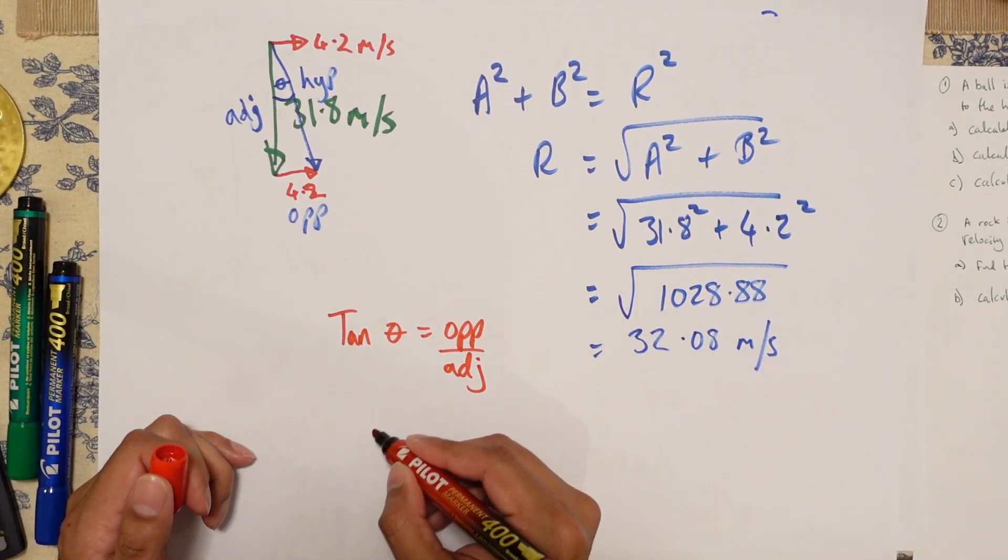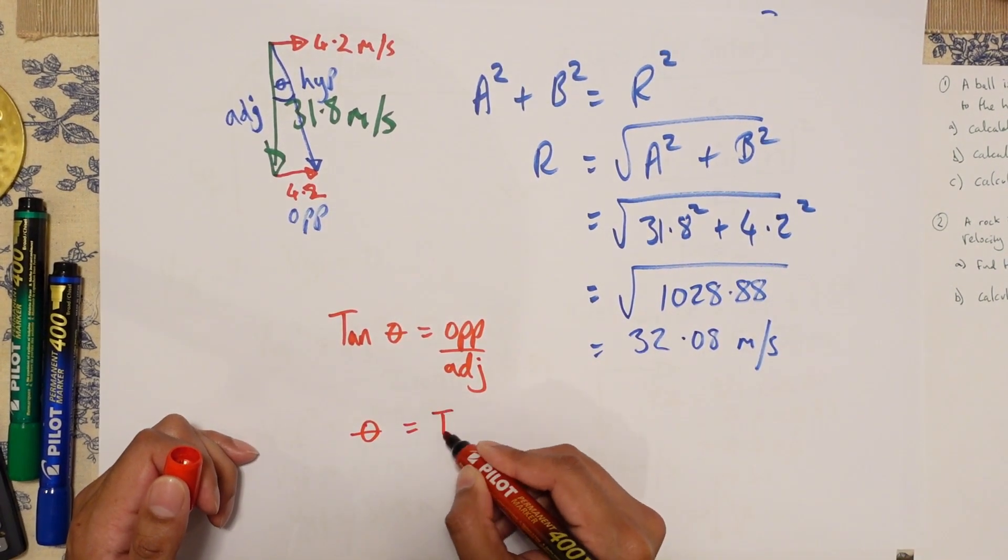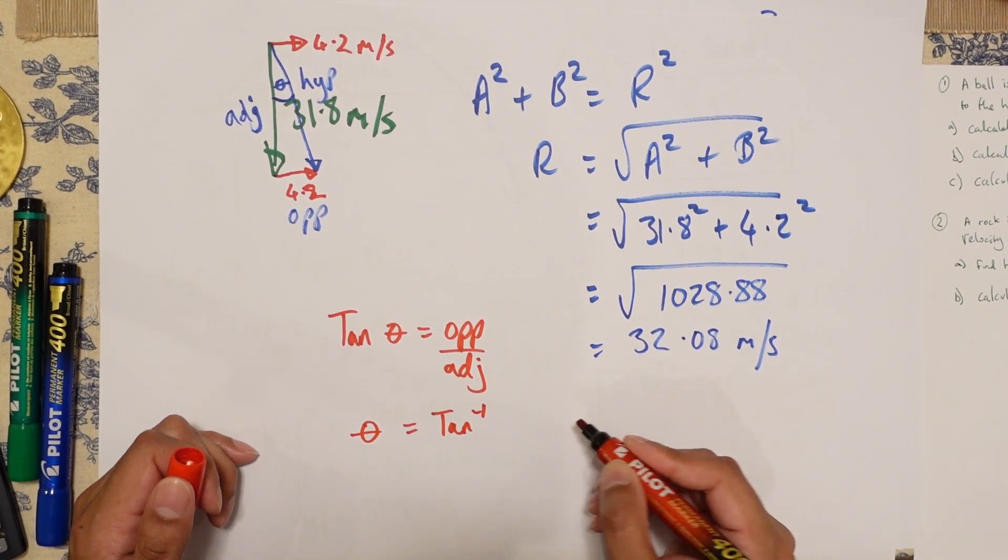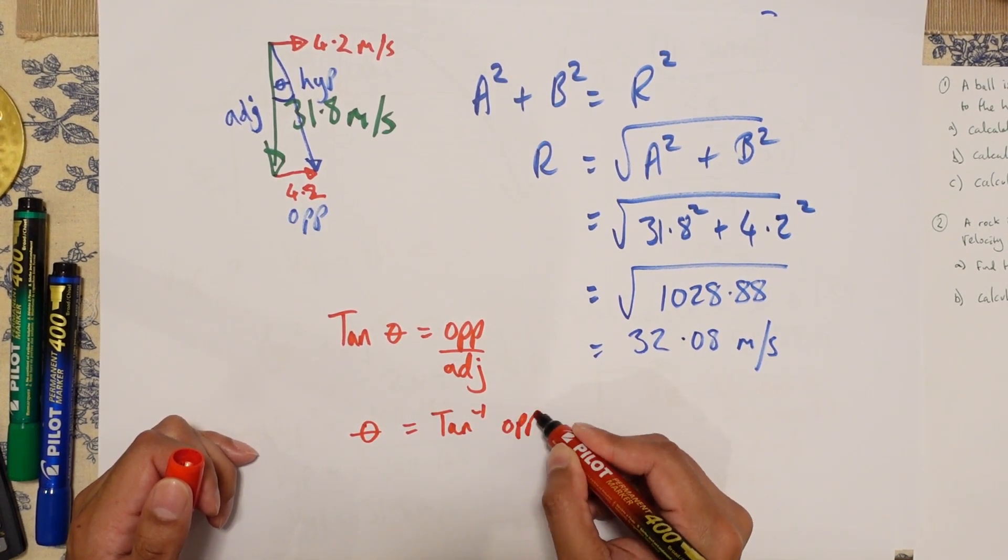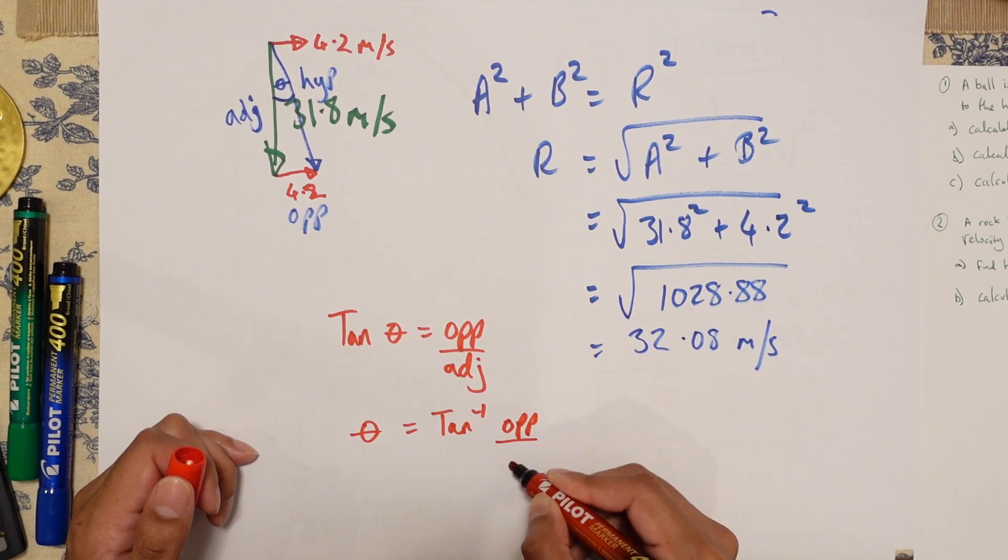So tan theta equals opposite over adjacent. So if you were to work out theta, it's going to be tan minus one, that's tangent minus one, opposite over adjacent.